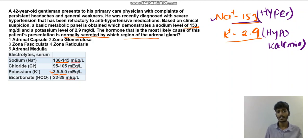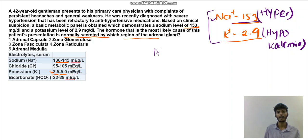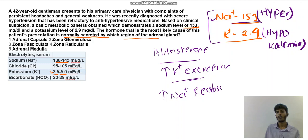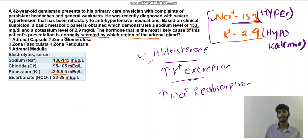Which substance causes hypernatremia and hypokalemia? That would be aldosterone. What aldosterone does is very simple: it increases potassium excretion in the urine and increases sodium reabsorption. So what happened here is that the patient is having hypernatremia and hypokalemia, and that is caused by aldosterone because aldosterone causes potassium excretion.